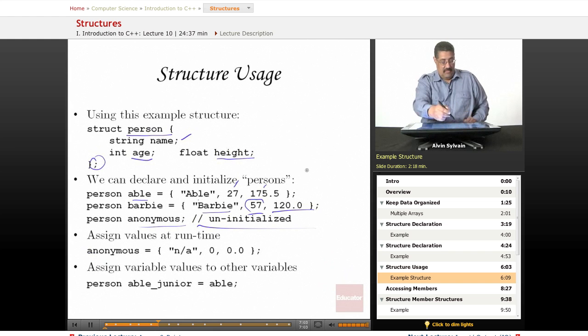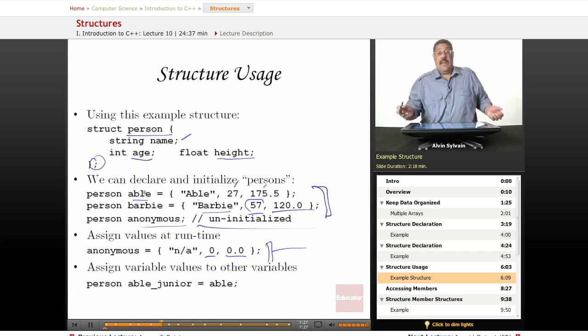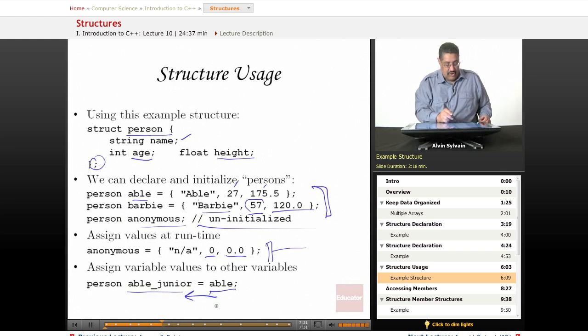But we can assign. See, these assignments were done at compile time. This assignment is at runtime. We set Anonymous equal to NA, 0, 0.0. Make sure you put these zeros in there so that you know what the values are.